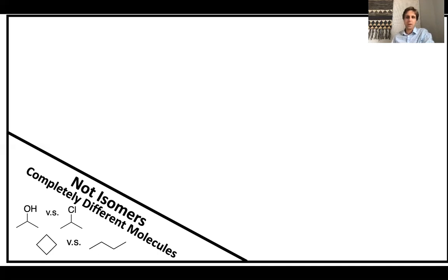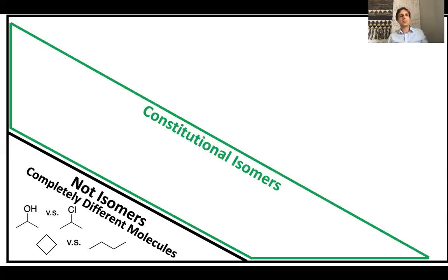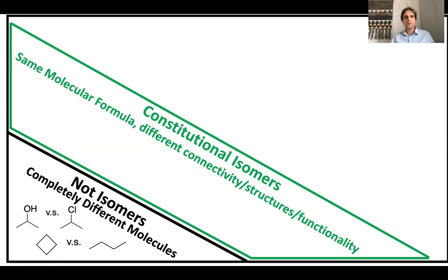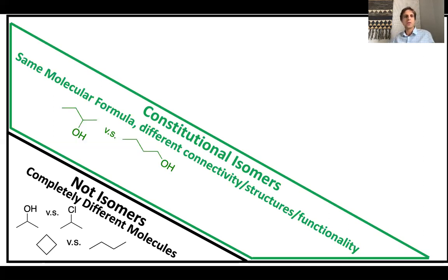The next and most broad class of isomers are constitutional isomers. These are compounds with the same molecular formula but different connectivity, structures, and functionality. So if the formula is C4H8, all constitutional isomers will share that formula, but there will be some difference in how the groups are connected, their structures, and potentially even their reactivity.